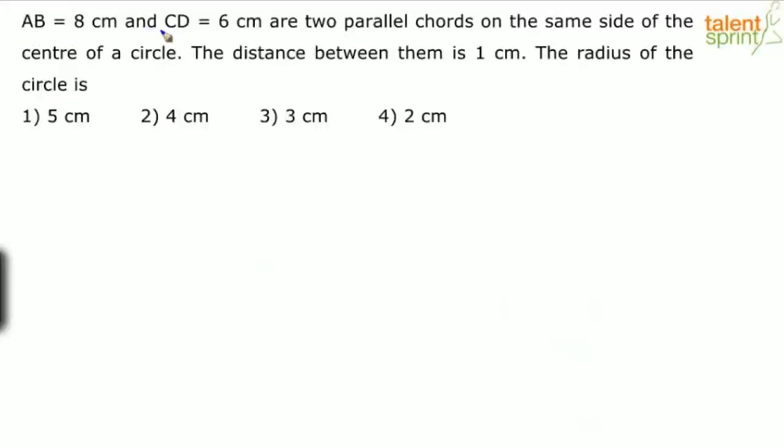AB equals 8 centimeter and CD equals 6 centimeter are two parallel chords on the same side of the center of a circle. The distance between them is one centimeter.